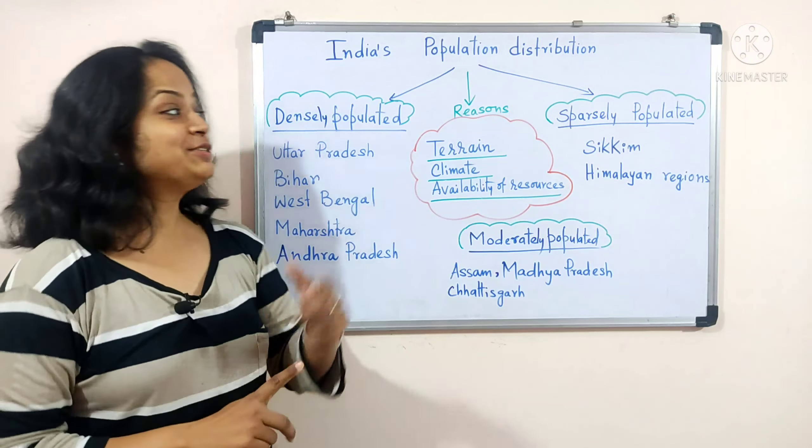When a question comes like 'Why is Uttar Pradesh considered a densely populated state?', we will have to go through all the region's key points. The three points are: first, terrain — meaning the landform; second, climate — the climatic condition; and third, availability of resources. With the help of these three points we are going to analyse each region one by one.